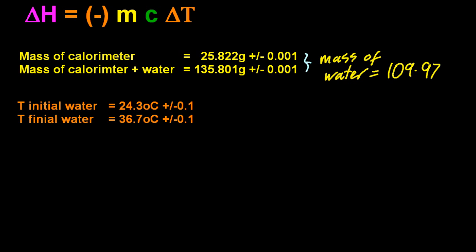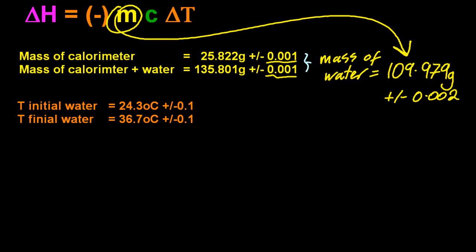Okay, so the mass of the water, well that's just the difference. And you have to add the uncertainties in order to get the uncertainty for this mass of the water. Because I've subtracted the numbers, that means you have to add the uncertainties. And that's the M in MCAT, the mass of water that you heated.